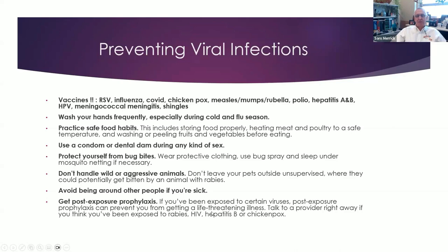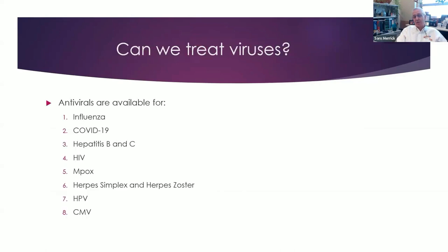There are certain viral infections where you can get post-exposure prophylaxis. If you don't have immunity to chickenpox, hepatitis B, rabies, or HIV, you can get treatments that will diminish your chances of developing disease. When I first started my career there were not many antivirals, but we now have more and more. For flu, the benefits of treatment are relatively modest but starting early can shorten the disease. For COVID-19 we have Paxlovid and other antivirals. Hepatitis B and C we have excellent treatments; HIV, mpox, herpes simplex and herpes zoster all have treatments available.